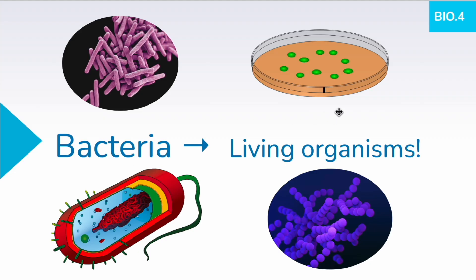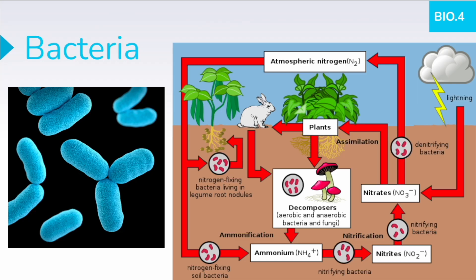We can grow bacterial colonies on things like petri dishes — this bacteria has been genetically modified to glow. Bacteria play really important roles in ecosystems. Yes, they can cause diseases, but they are also really important in the cycling of nutrients. For example, this is the nitrogen cycle, and there are different types of bacteria — like nitrogen-fixing, nitrifying, or denitrifying bacteria — that play different roles in transferring the nitrogen that exists in the atmosphere so that it can be accessible to other living things like plants and animals.